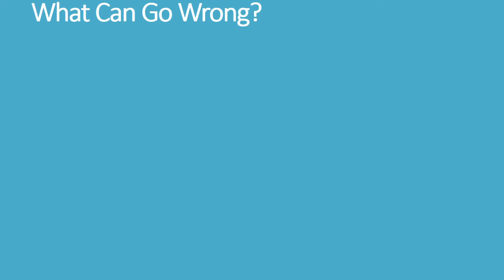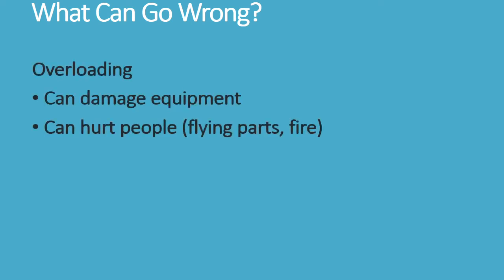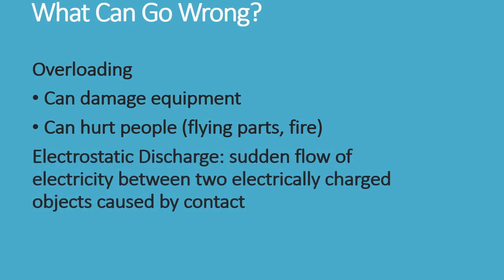So what can go wrong? The components we're using have physical limitations. If we try to push too much electricity through them, they can be damaged — they can start to smoke, catch fire, or actually blow apart. If we take two objects that are charged and aren't supposed to be together and we put them together, this can cause electric charge to flow, which can lead to a spark and one or both of them being damaged.